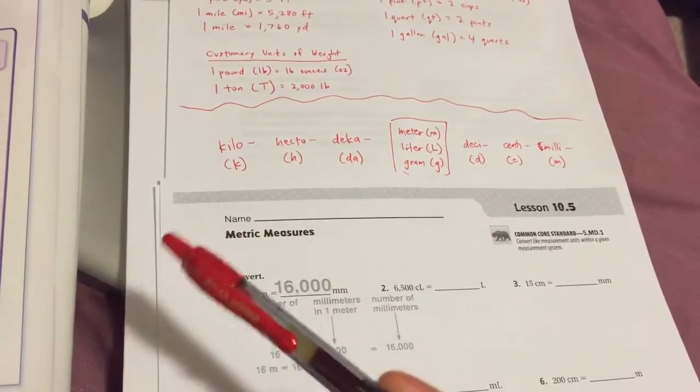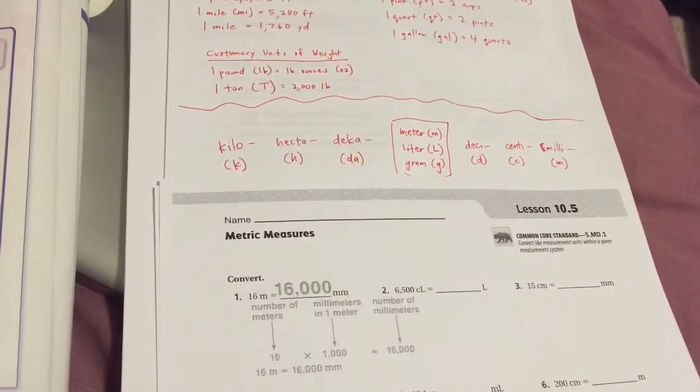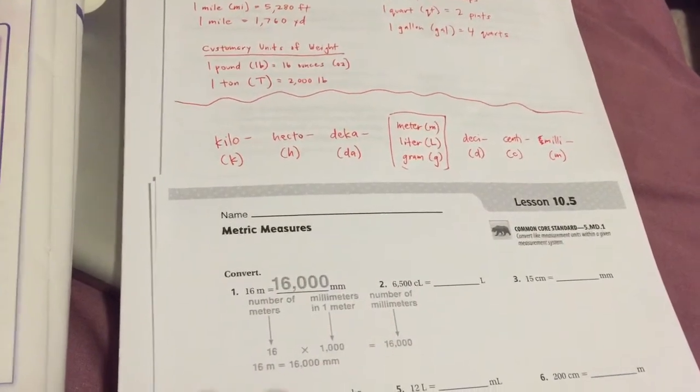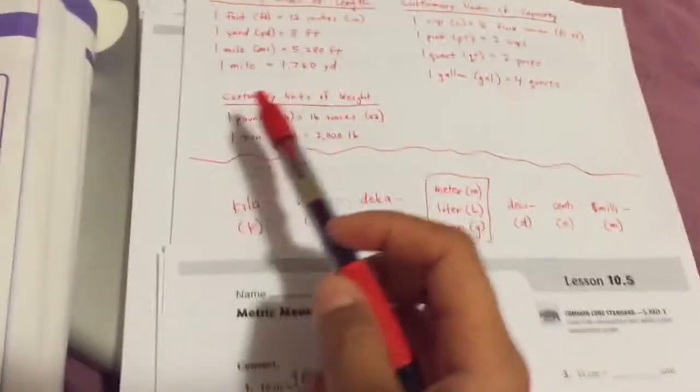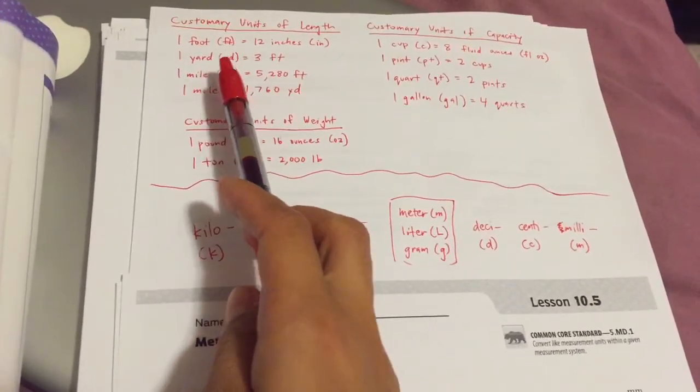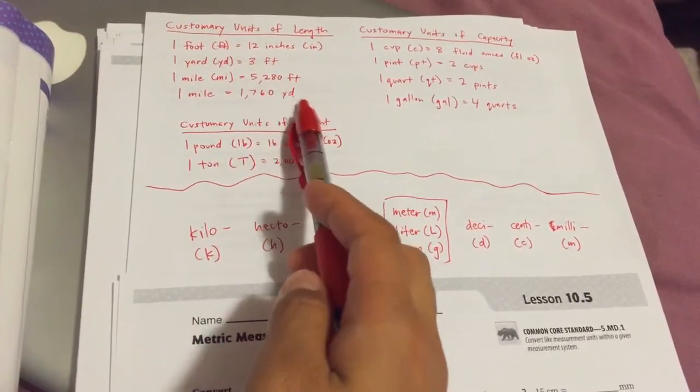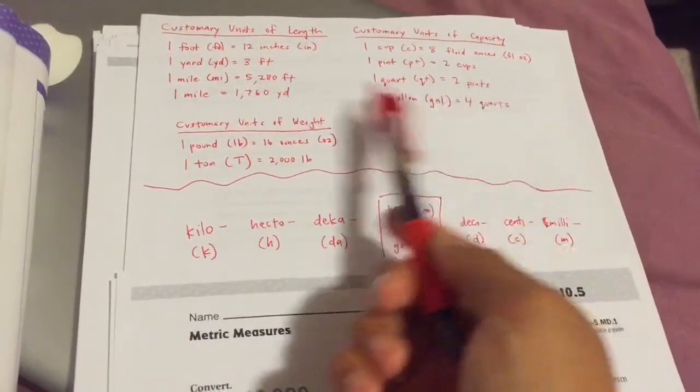We're going to be multiplying and dividing by powers of 10: 10, 100, 1,000, 10,000, and so forth, as opposed to before where our conversions focused on multiplying and dividing by 12, or 3, or 1,760.